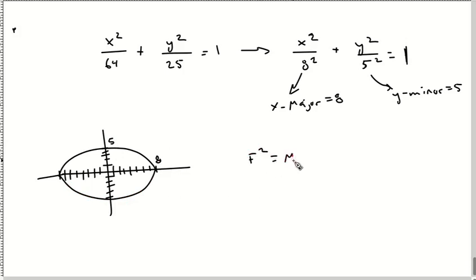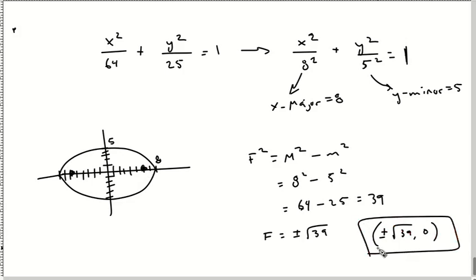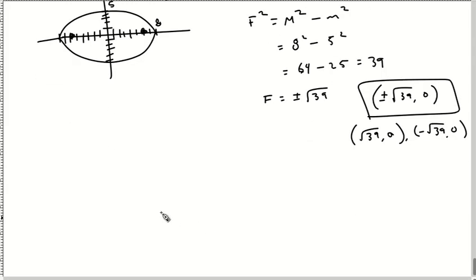Now, to find the focus: focus squared is equal to your major squared minus the minor squared. So I have eight squared minus five squared — 64 minus 25. I got a 39. So to find my actual focus, I square root both sides, and my focus is plus or minus square root of 39, comma zero. It's along the X since it's an X major. I don't know if MyMathLab will allow you to do plus or minus like that — you might have to write them out individually.